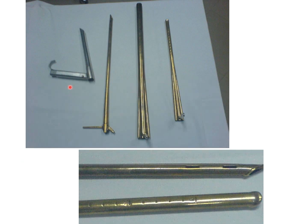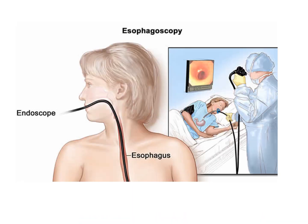These are the endoscopes used in ENT: the direct laryngoscope, the bronchoscope, and both the upper-end and standard rigid esophagoscope. The difference between a bronchoscope and esophagoscope is that the bronchoscope has holes at the end and no graduations, whereas the esophagoscope has graduations. Flexible esophagoscopy is carried out through the mouth to visualize all the areas.